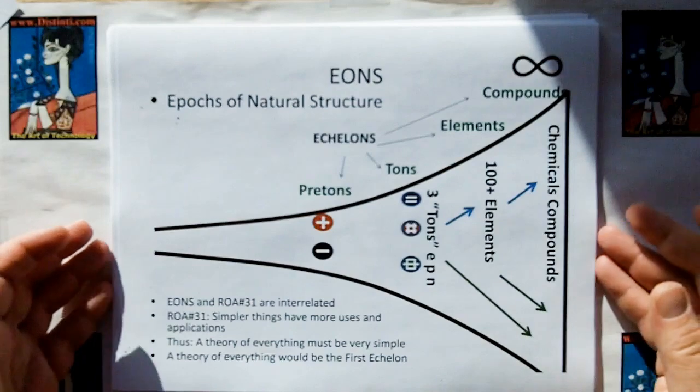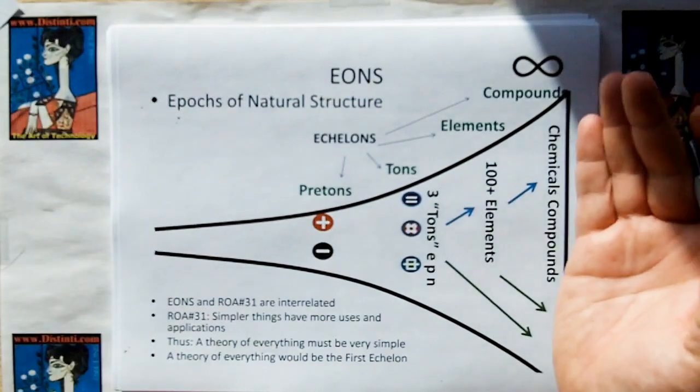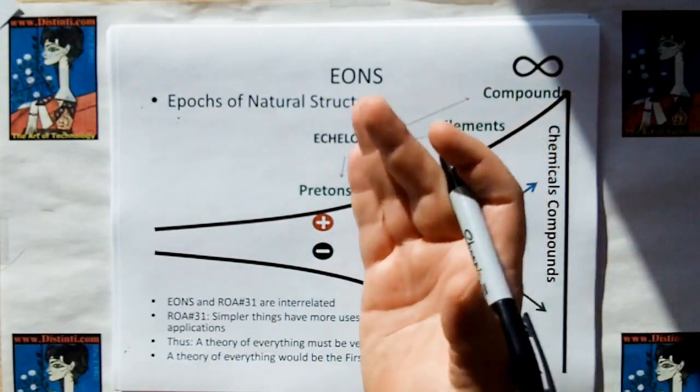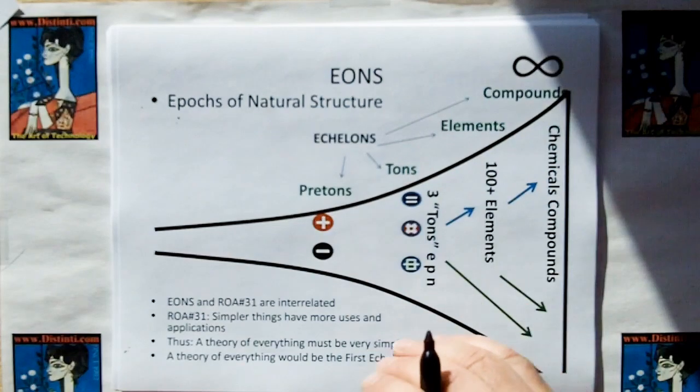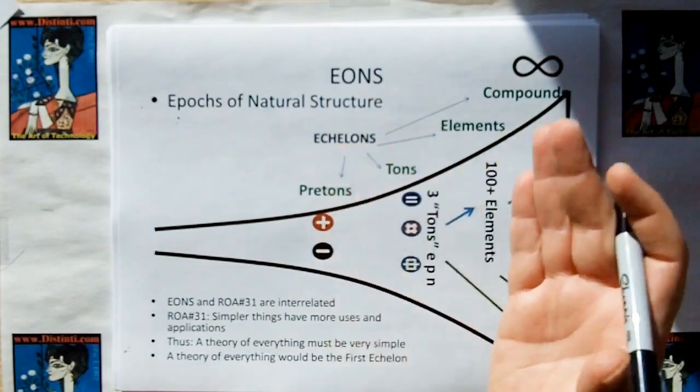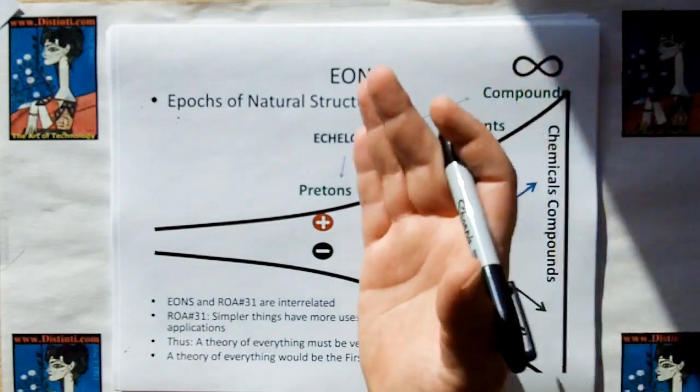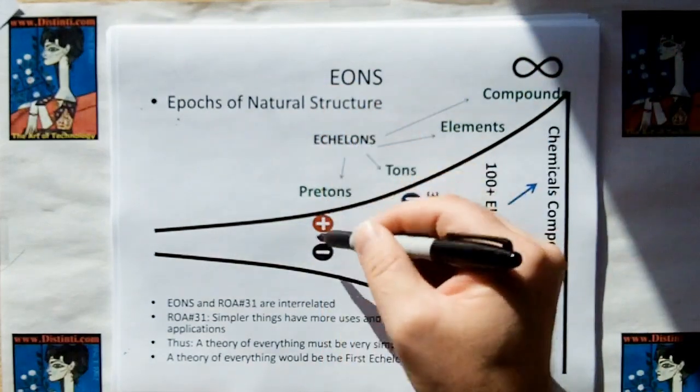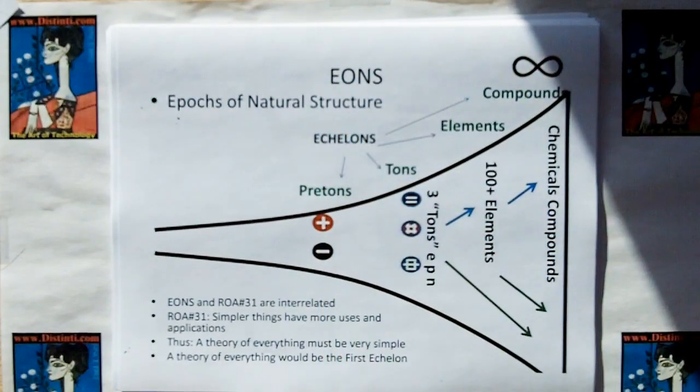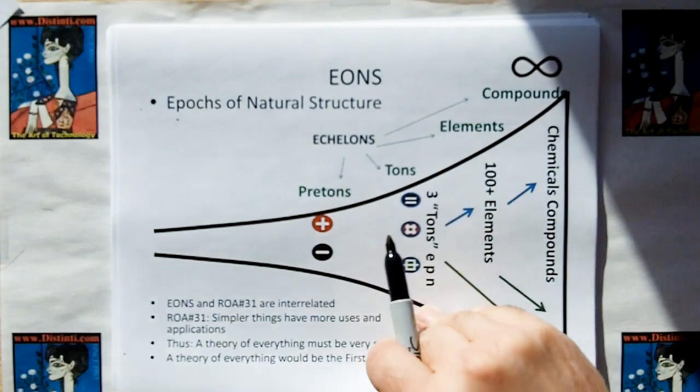And eons, that are called for short Epochs of Natural Structure, are related to the Rule of Acquisition number 31, where you have to get simpler as you go lower, because simpler things have more uses. You can only synthesize infinity from something that is very simple. Thus, the theory of everything must be very, very simple.